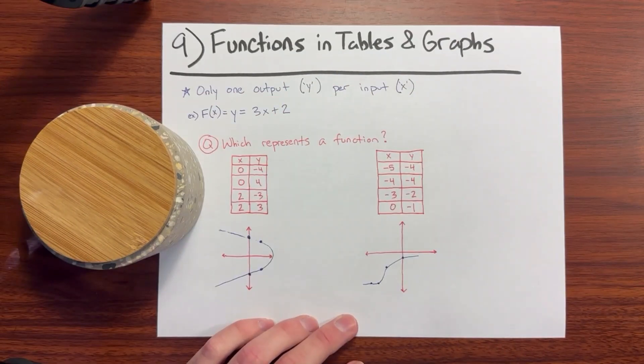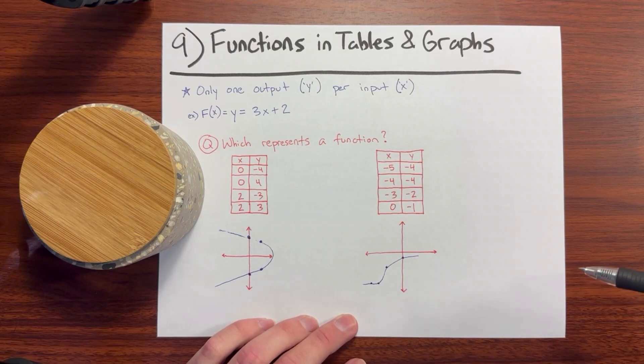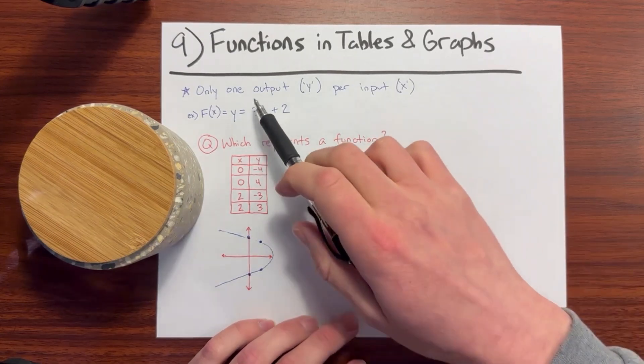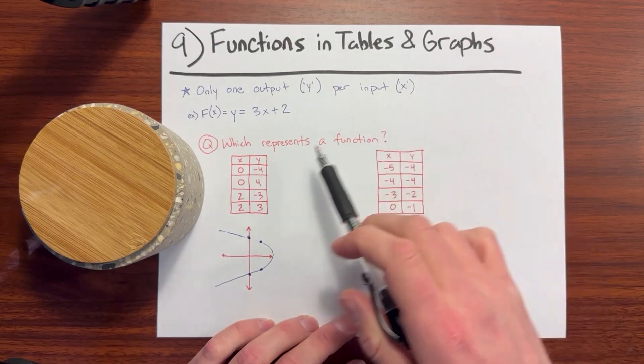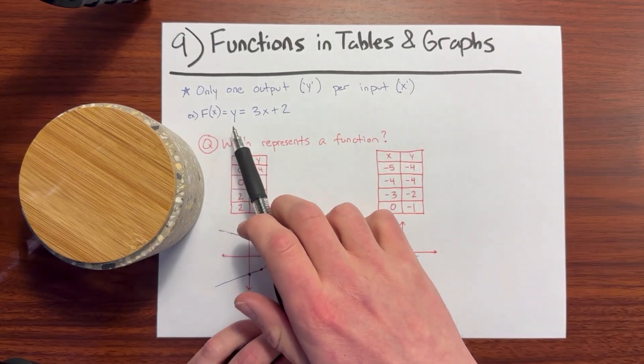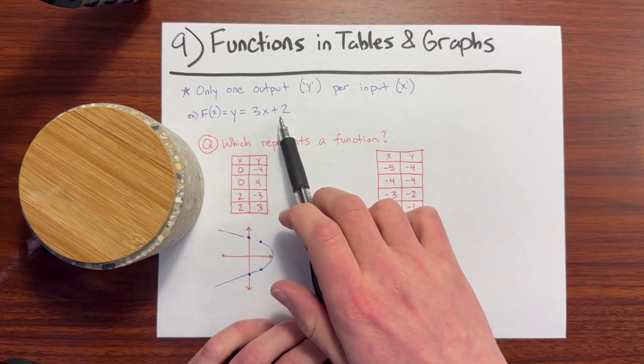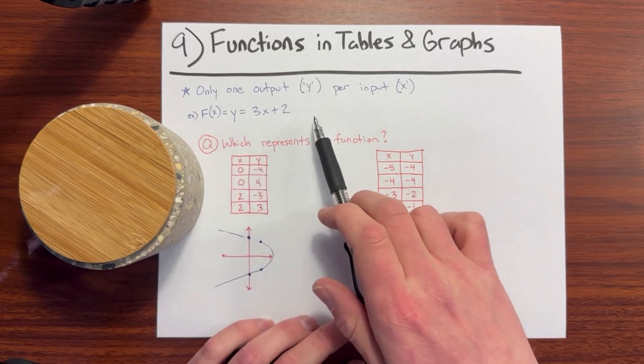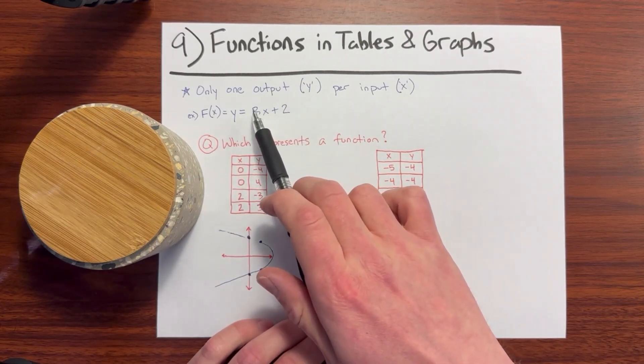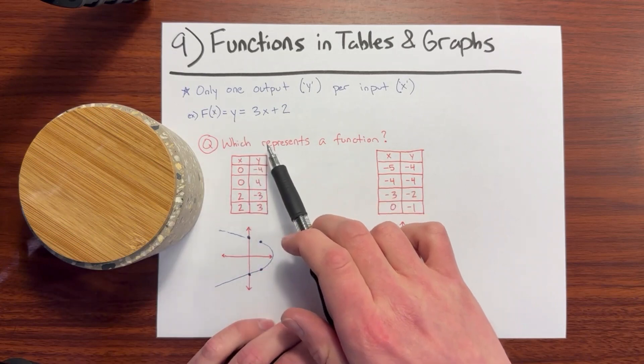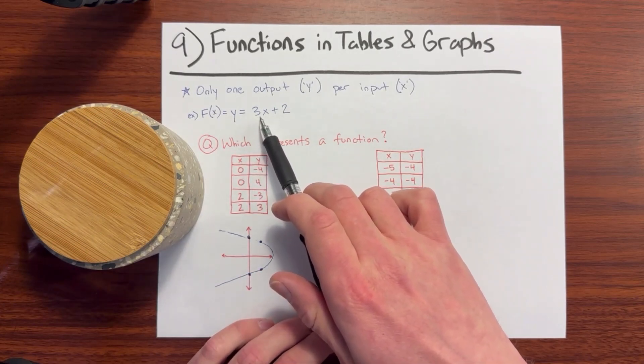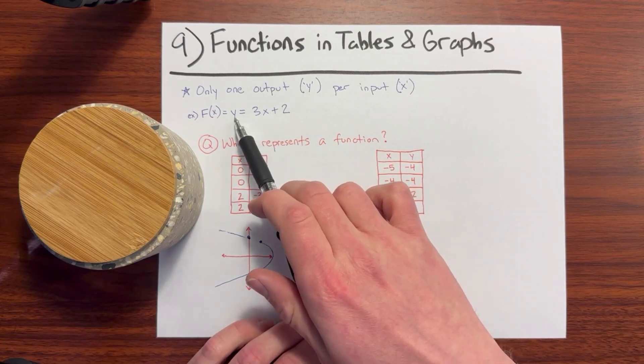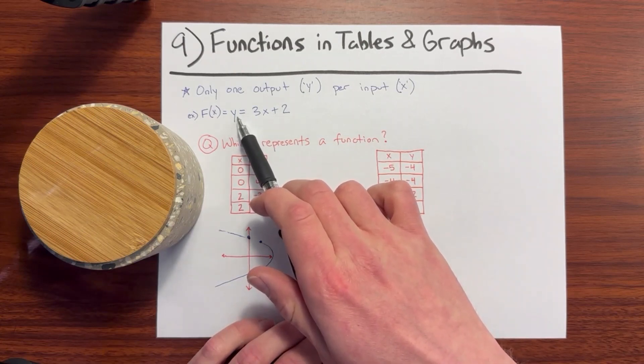Number 9: Functions in tables and graphs. You'll need to be able to recognize a function in a table or a graph by determining whether or not there is only one output for every input. For example, let's say that a function represents the equation for a line, y equals 3x plus 2. So the function only has one input, x. And for every input, there should only be one output. In other words, if we plugged in a certain number x, we couldn't be getting multiple y's out of that equation.